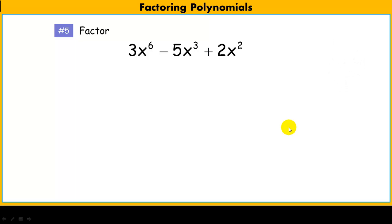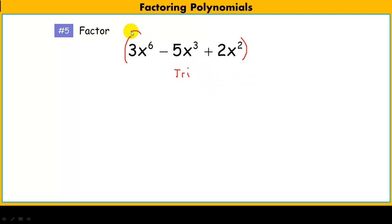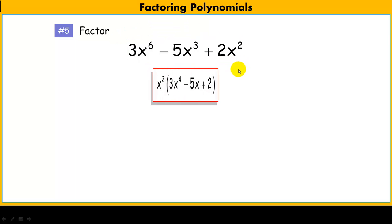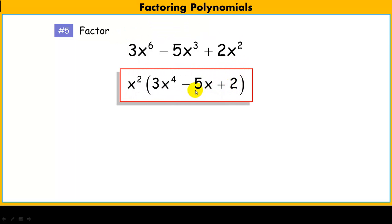Now here we have a trinomial. The rules really don't change except that because we start out with a trinomial, when we turn this trinomial polynomial into factored form, we're pulling out a greatest common factor but what's left behind is still going to be a trinomial. All we're doing is undistributing its greatest common factor. In this case, that greatest common factor was x squared.